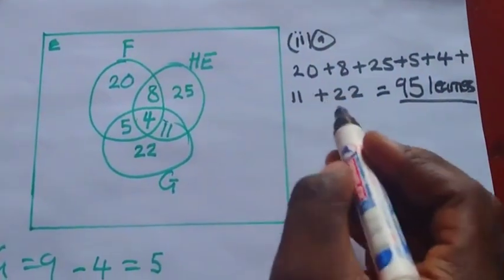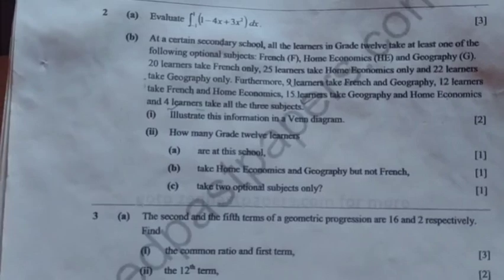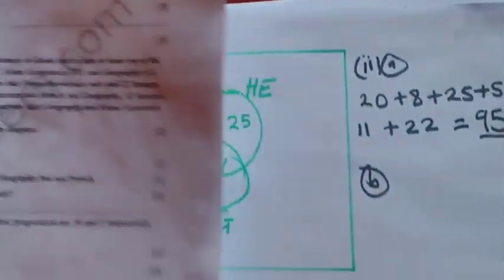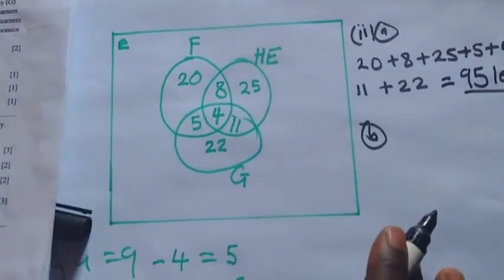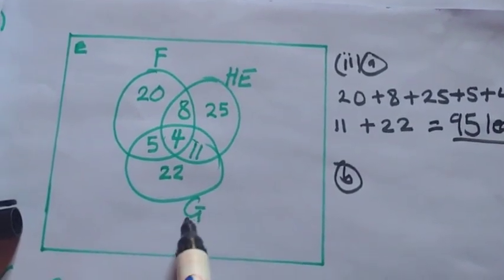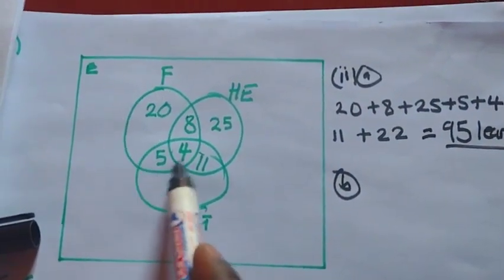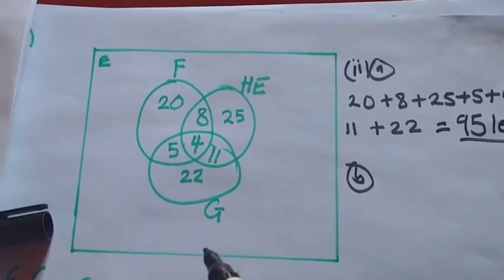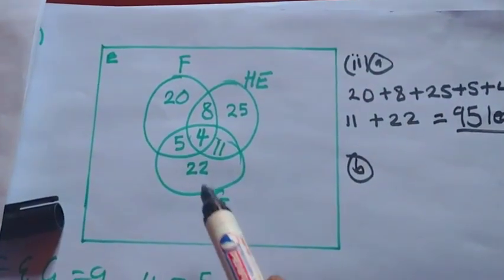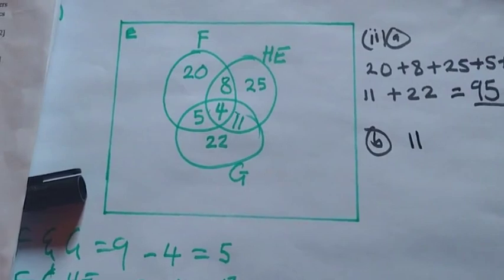Now we come to question B. The question asks: how many grade 12 learners take home economics and geography but not French? So the French part is excluded. We just need the number in the geography-and-HE-only region, which is 11. The answer is 11 learners.